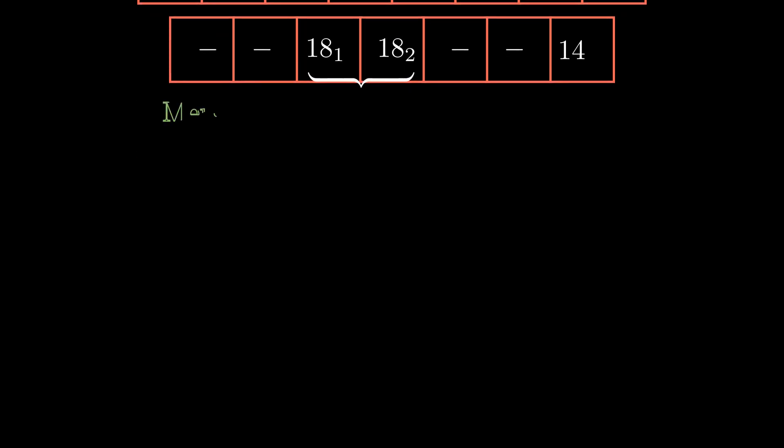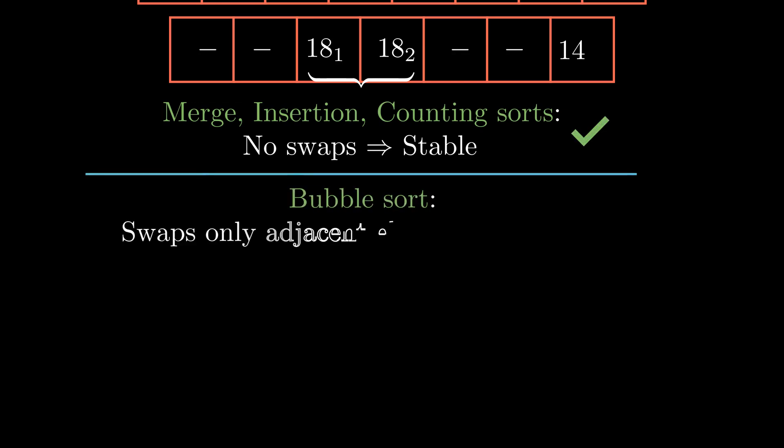Time for a reality check. Merge sort, insertion sort and counting sort have no swaps, so they are stable. Bubble sort swaps only adjacent elements, so that is stable too.